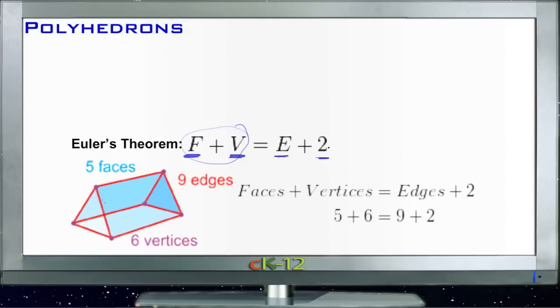So for this shape right here, you can see we have five faces—we have this one that's on the side toward us, one on each end, one on the side opposite us, and one on the bottom. And then we have six vertices because we have three corners on each end: one, two, three, four, five, six.